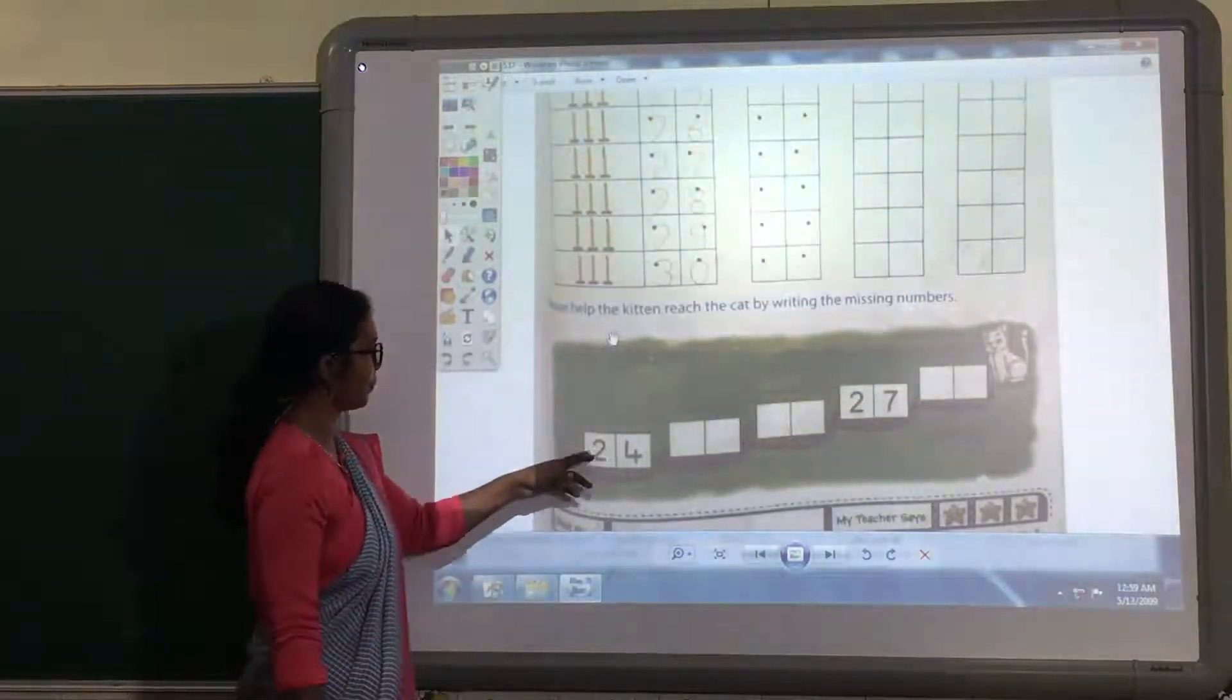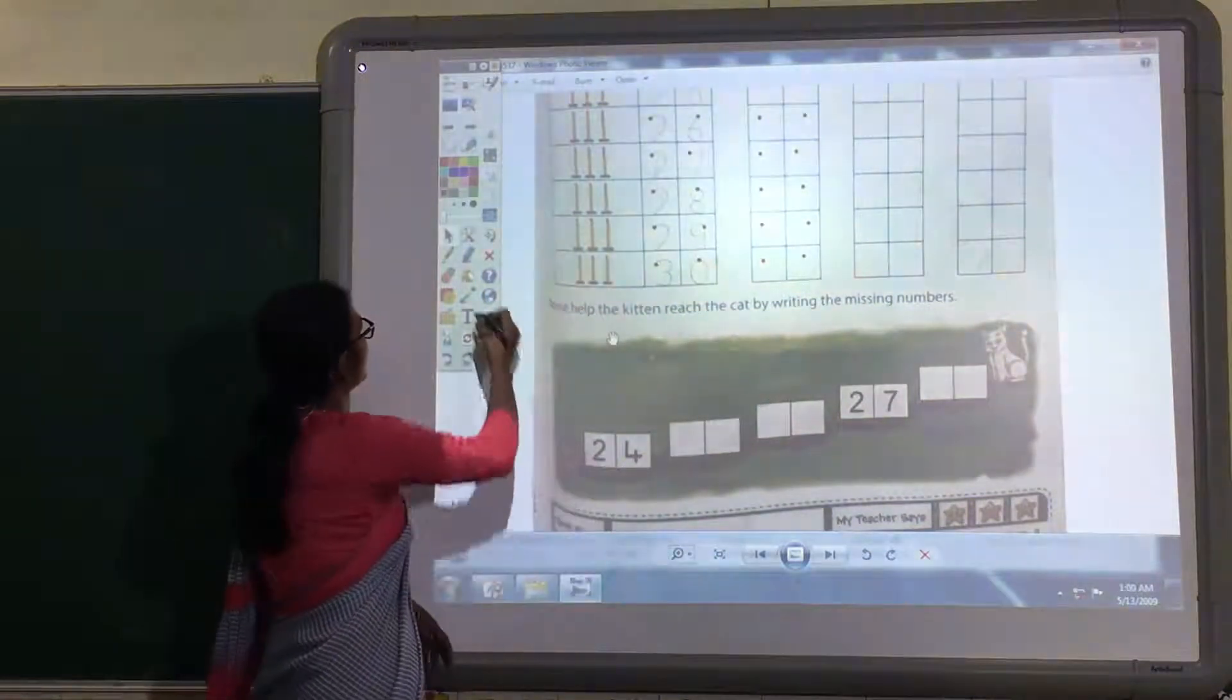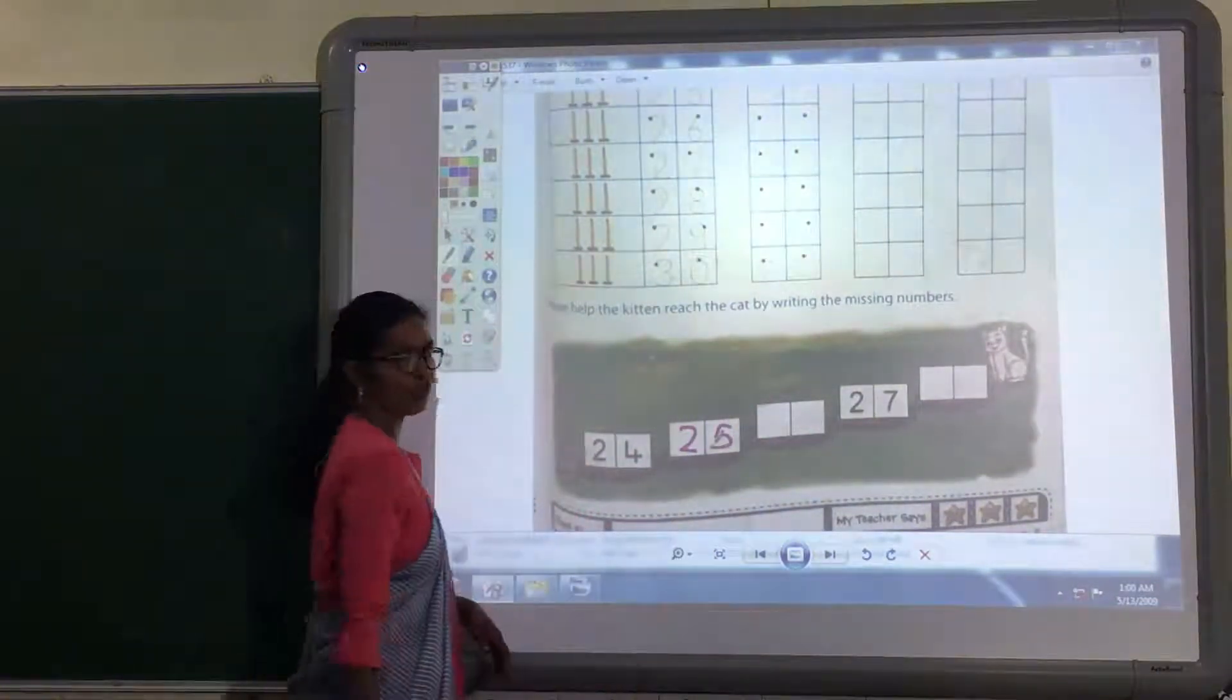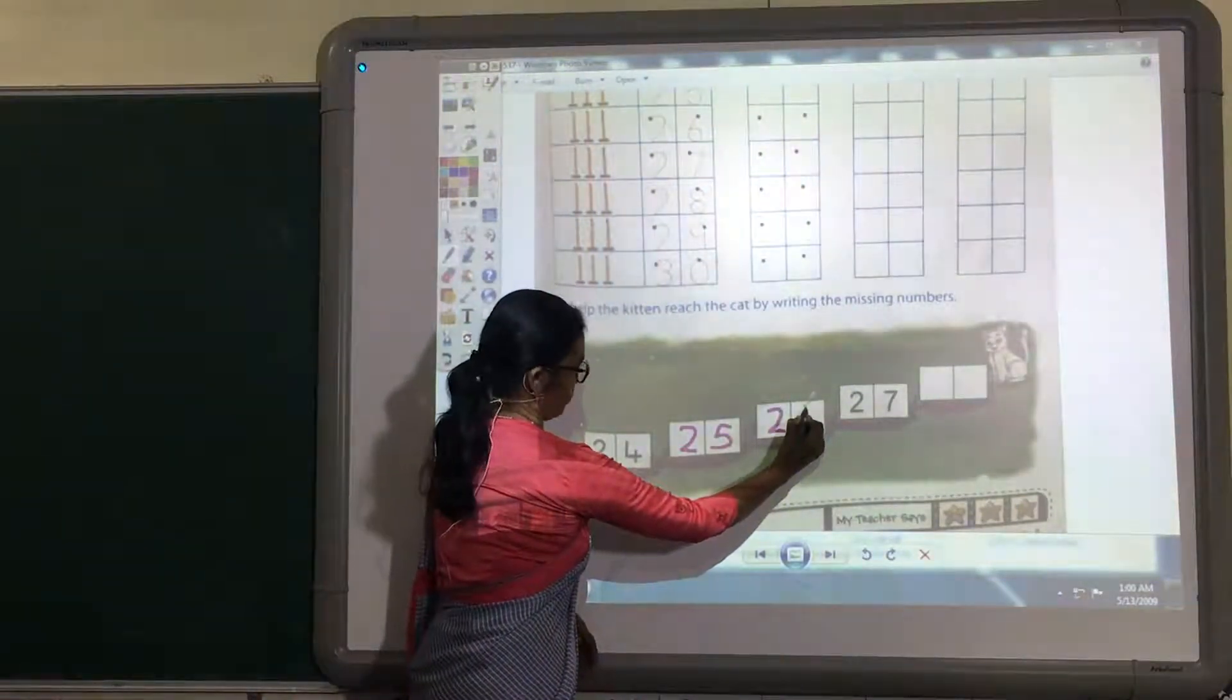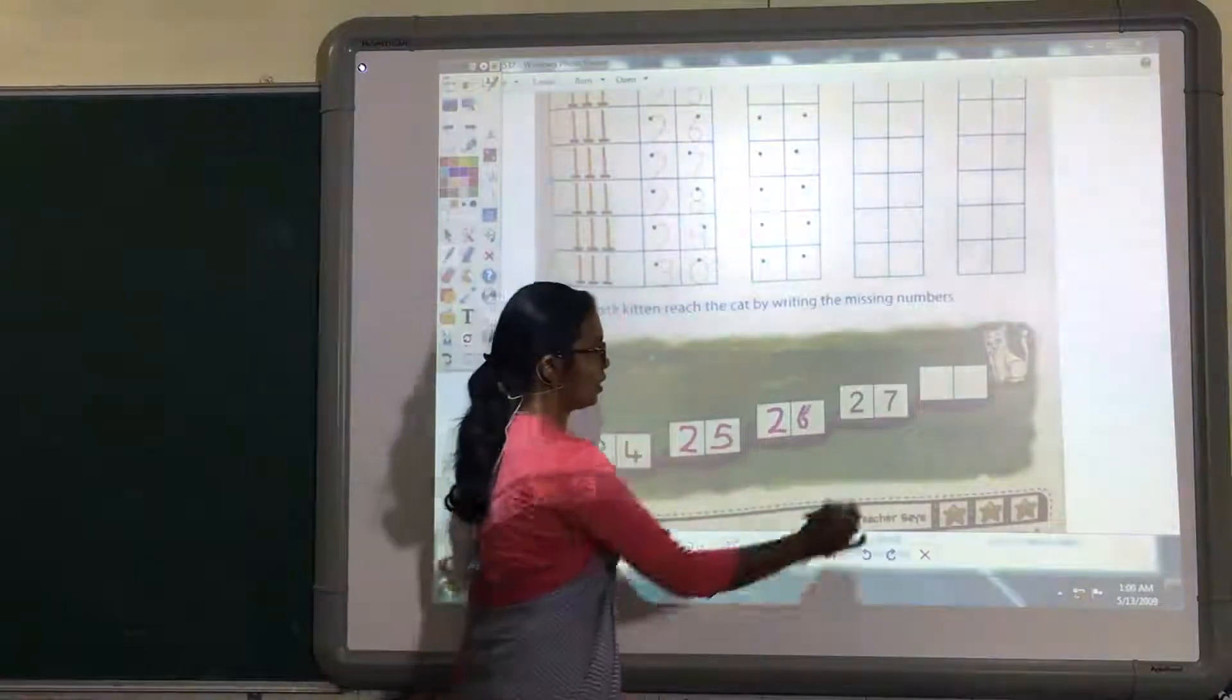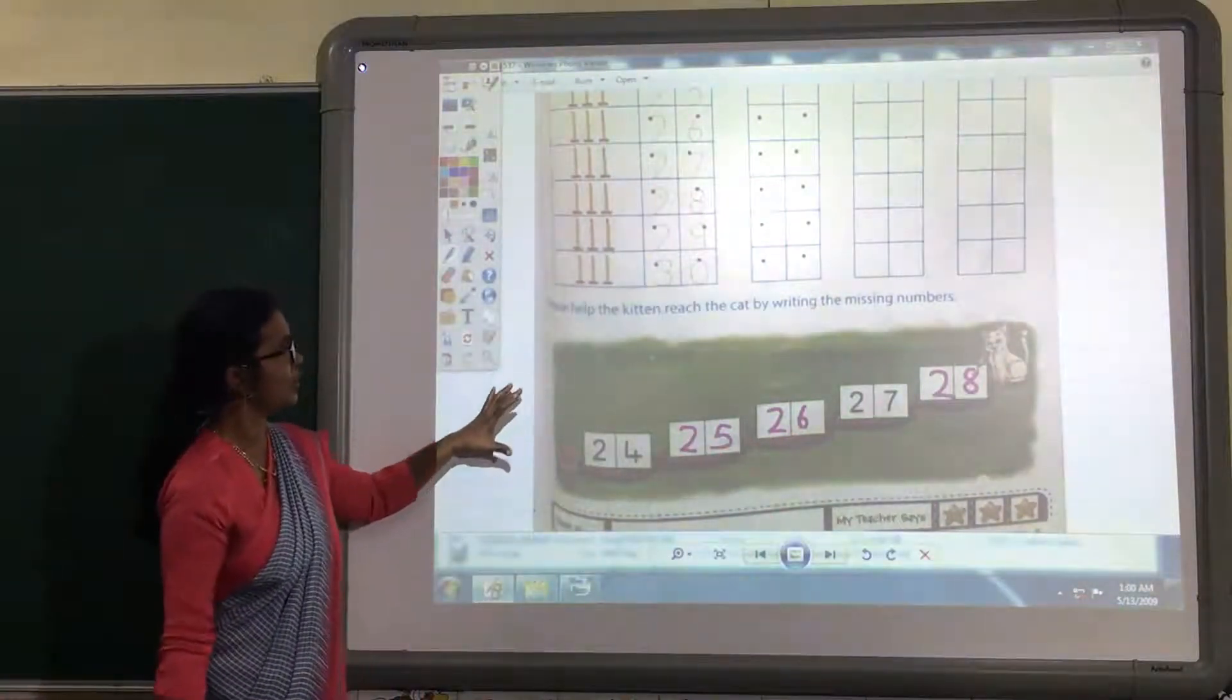Here you see two tens and four ones, 24. Here what you have to do? Two tens and five ones, 25. Two tens and six ones, 26. Two tens and seven ones, 27. Two tens and eight ones, 28. You have to do this.